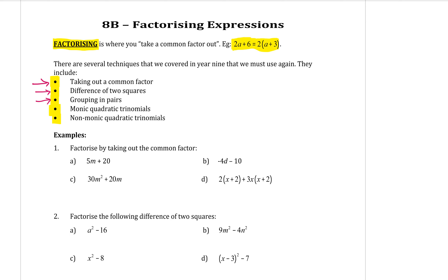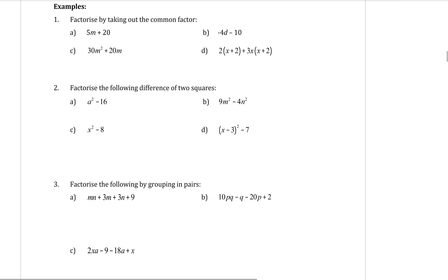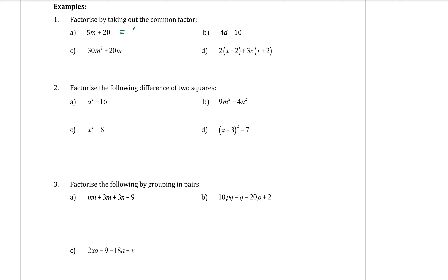Question one is factorizing by taking out a common factor. Look at the terms in your expression — 5m and 20. The highest common factor is 5, so that comes out the front: 5, then open a bracket. Divide each term: 5m divided by 5 is m, and 20 divided by 5 is 4. So we have 5(m + 4).